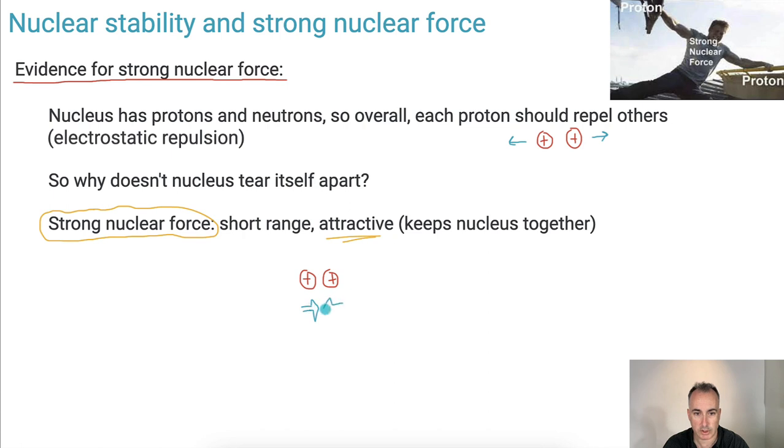But it's only short range. At larger ranges, it doesn't work. Then it's the much weaker electromagnetic repulsion that takes over. So that's why, like in Rutherford scattering, we've got a positive particle coming in near a positive nucleus. Of course, as it comes closer, it will get repelled. But in the nucleus itself, this is the strong force that's holding together the nucleus.